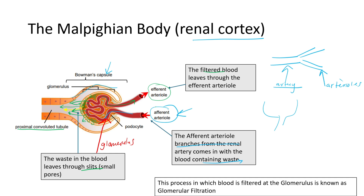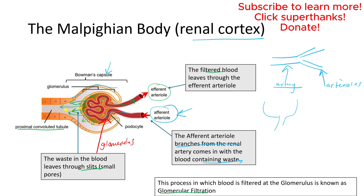The efferent arteriole carries filtered blood out of the Malpighian body. That's just the tip of the iceberg — in the next video we'll be talking about the full process called glomerular filtration. This video was just to give an idea that filtration happens at the glomerulus. In our next video we'll look step by step at how that happens. I hope this has given you understanding — thank you for watching.